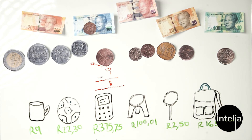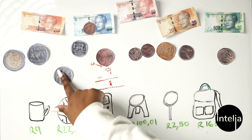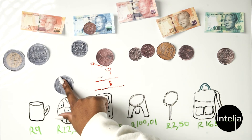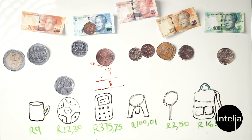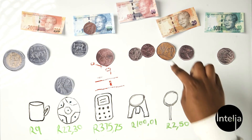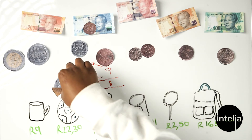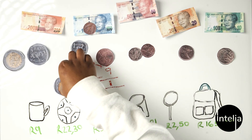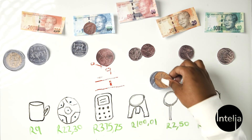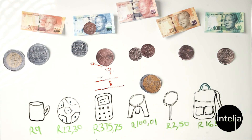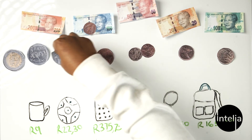Now the lollipop — it's 2 rand 50. I'm sure you buy these at your tuck shop. You have 2 rand, and what's short is 50 cents. You already have 50 cents here, so you add it to your 2 rand and you have 2 rand 50.